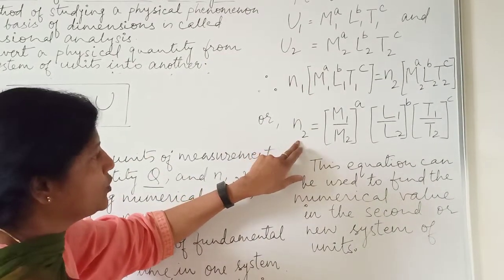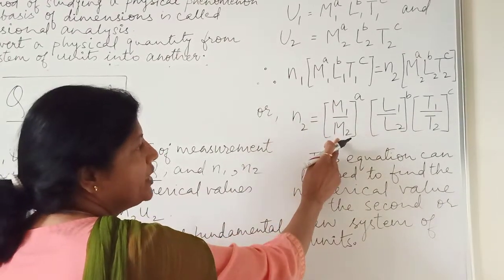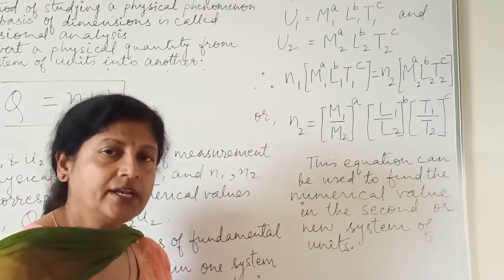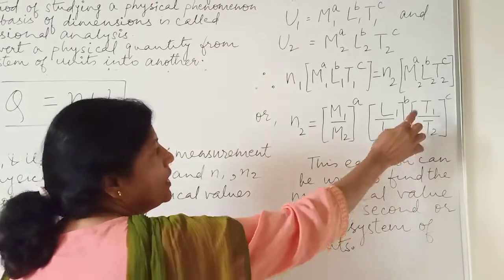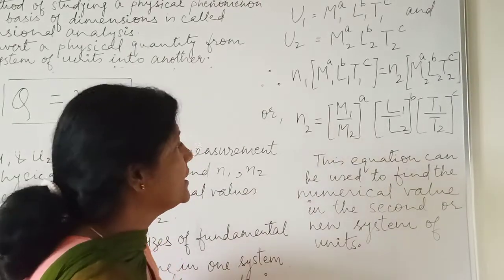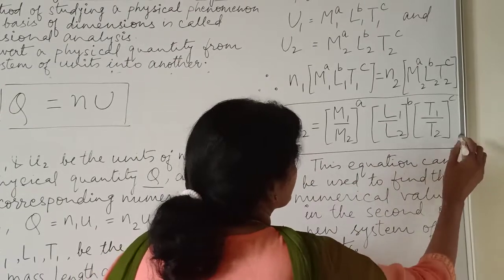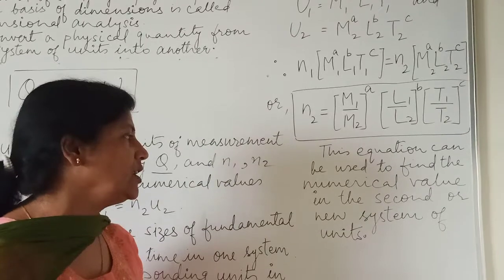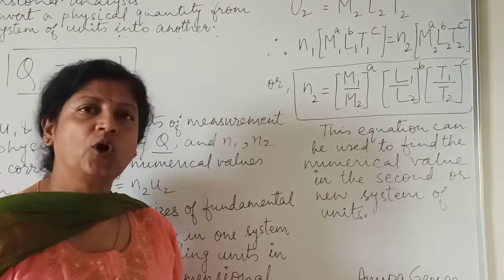From this equation, we can write N₂ is equal to (M₁/M₂)^A × (L₁/L₂)^B × (T₁/T₂)^C. This equation can be used to find the numerical value in the second or new system of units.